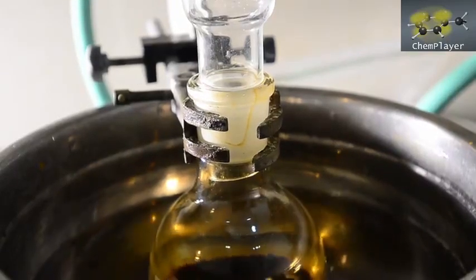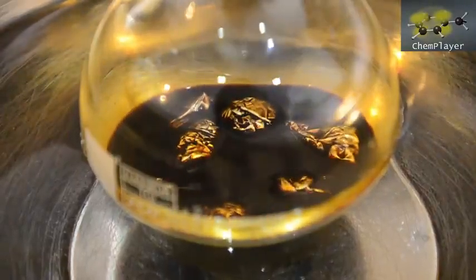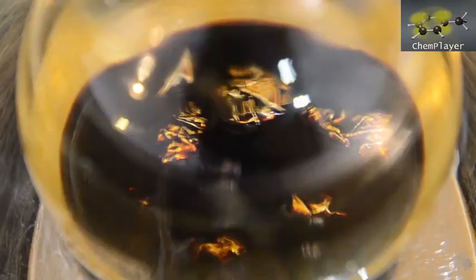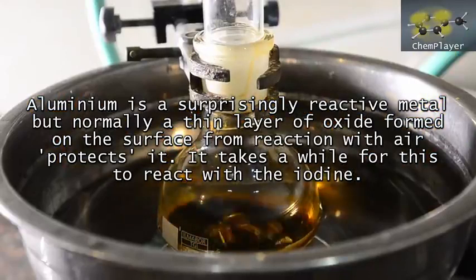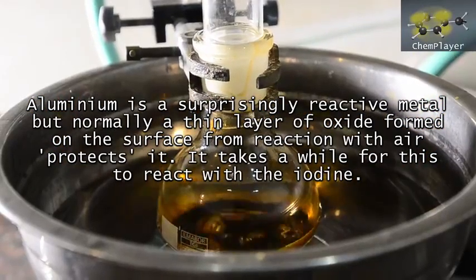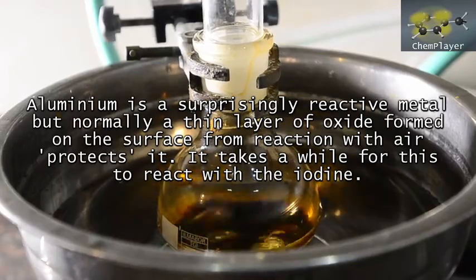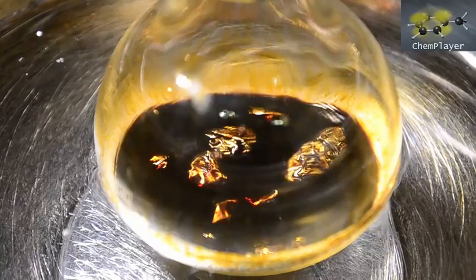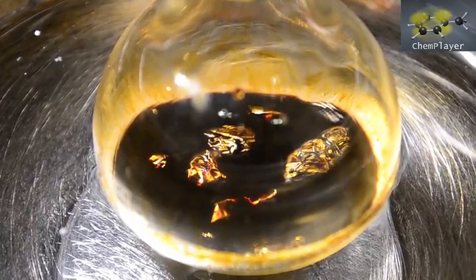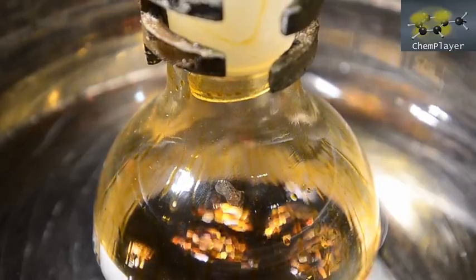No sign of any obvious reaction to begin with. But aluminum metal always has a very thin outer layer of aluminum oxide on it. This fools you into thinking it's not a very reactive metal, but that's not the truth. It's actually very reactive once this coating of oxide is gone. So we'll keep stirring and wait. After just a few minutes, here we go, the reaction's starting up.